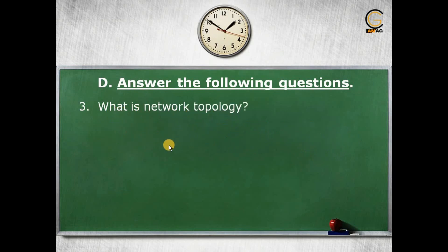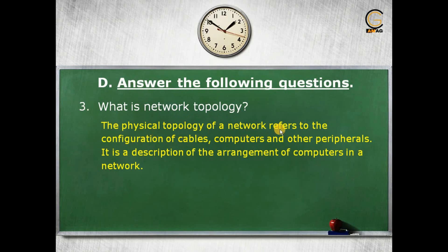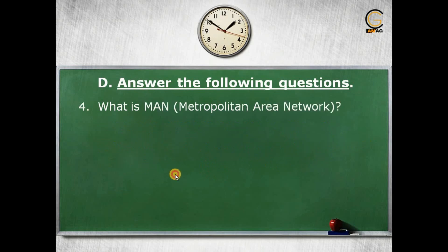Next question: what is network topology? The physical topology of a network refers to the configuration of cables, computers, and other peripherals. When connecting computers in a network using wires and supporting devices, the configuration of how all those computers and peripheral devices are connected is known as network topology — it is a description of the arrangement of computers in a network.